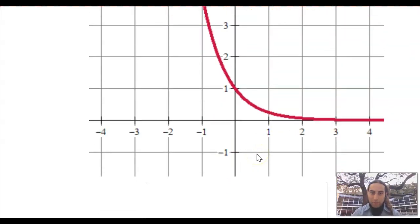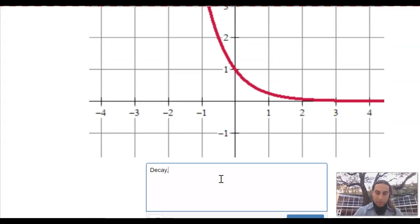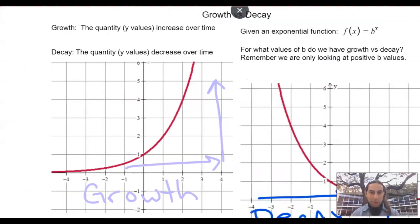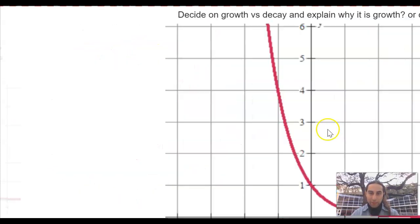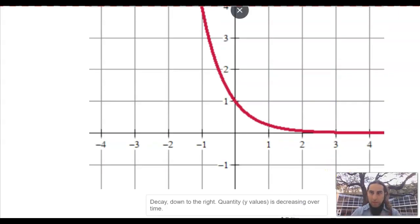So do you think this is growth or decay? Well, we know that this is decay because it's going down to the right. It is, and just to use our notes, what is it? It is the quantity of y values is decreasing over time. Hit submit. Let's go next.